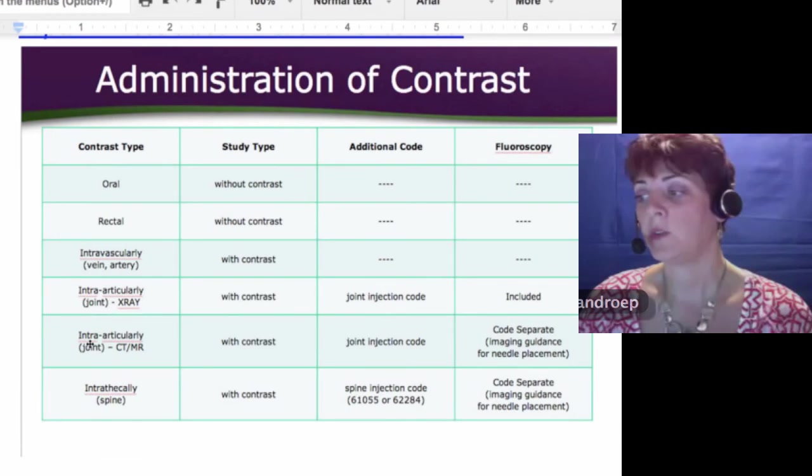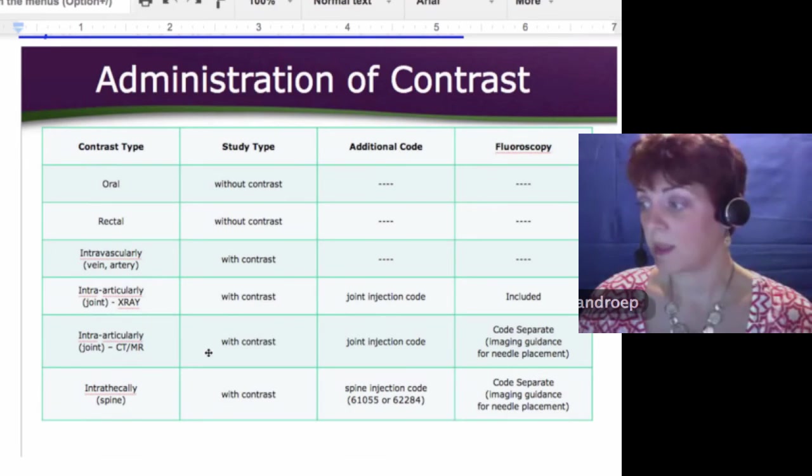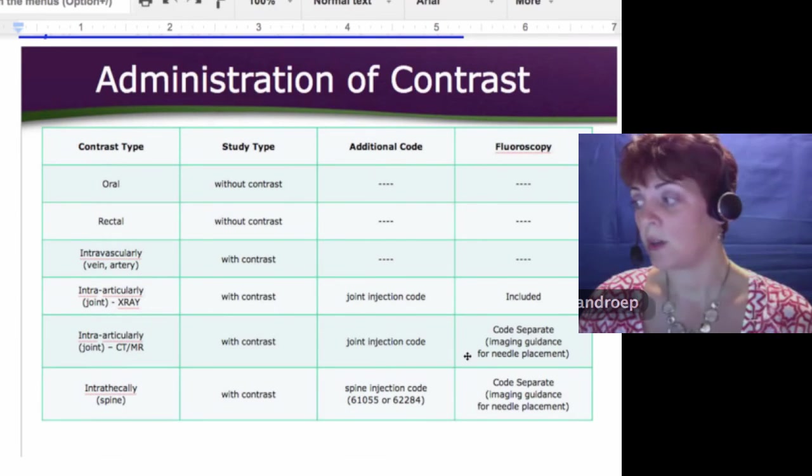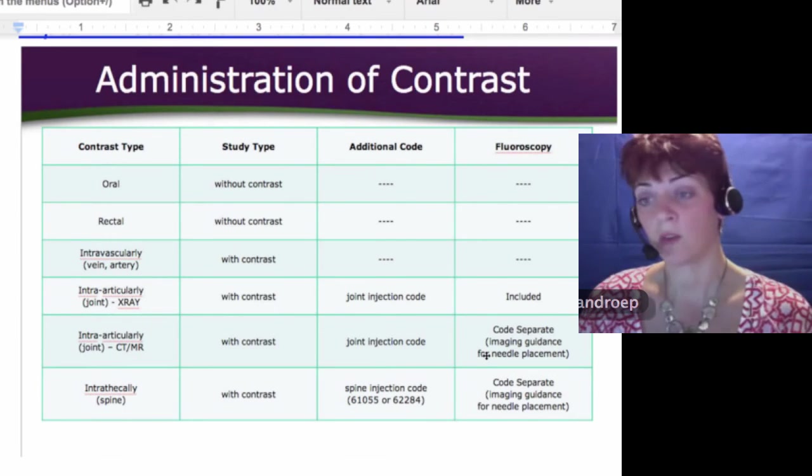If you do intra-articularly of the joint using CT or MR, not x-ray, you code contrast, the indented contrast codes, you get to code a joint injection code, but this time you get to code fluoroscopy separately, it's not bundled in.